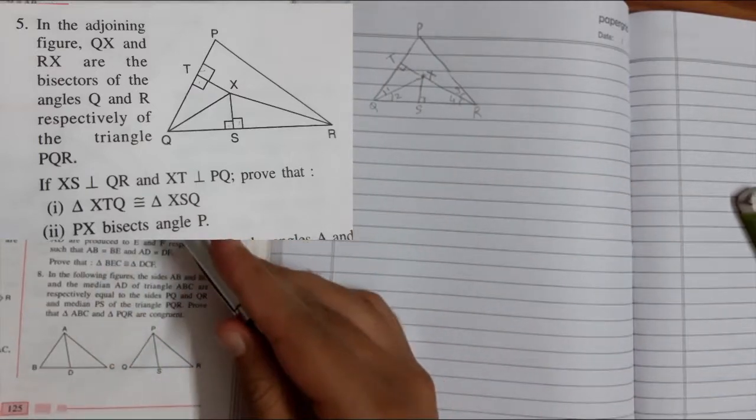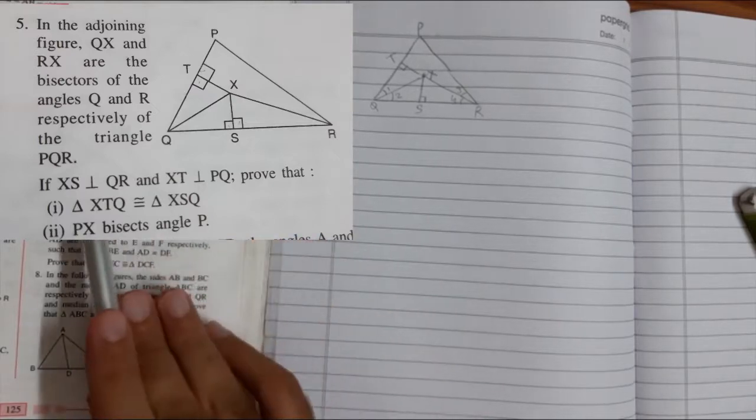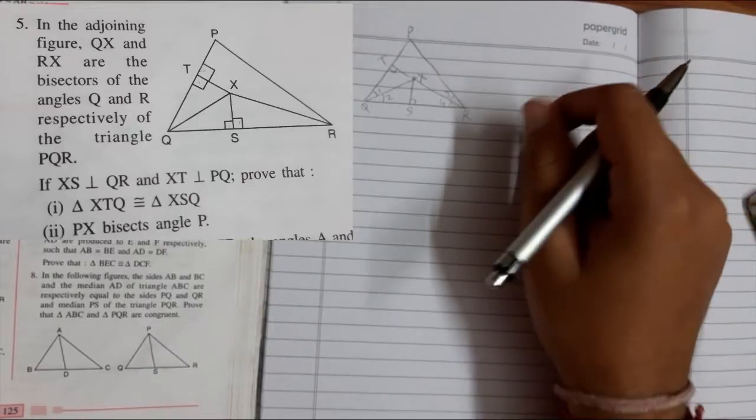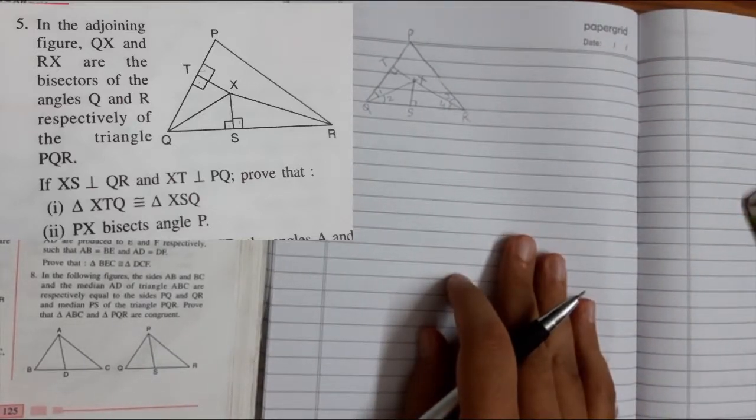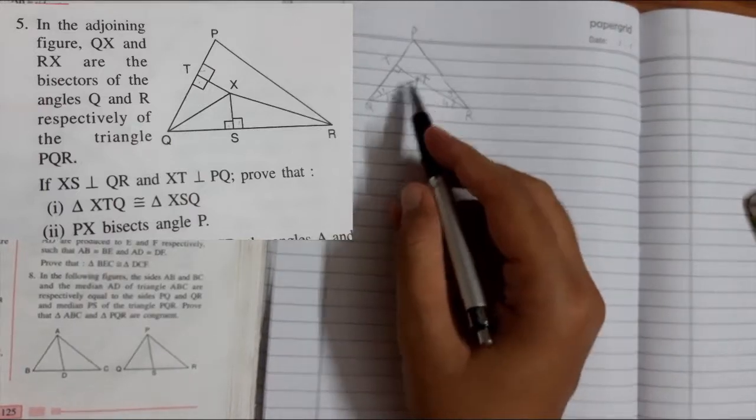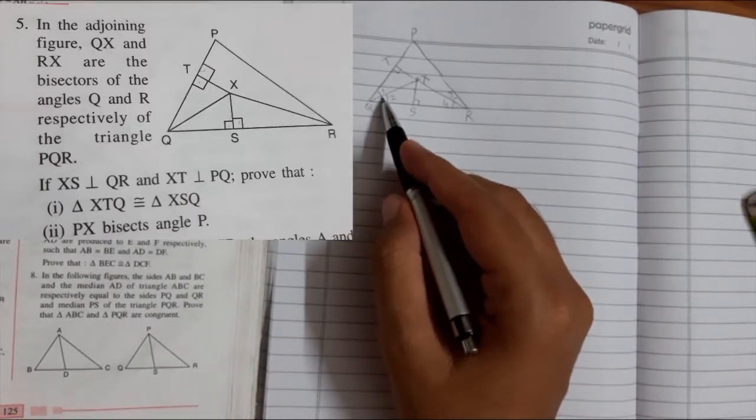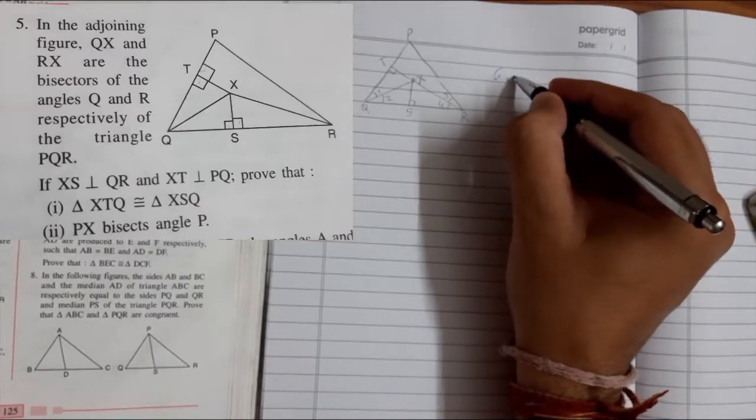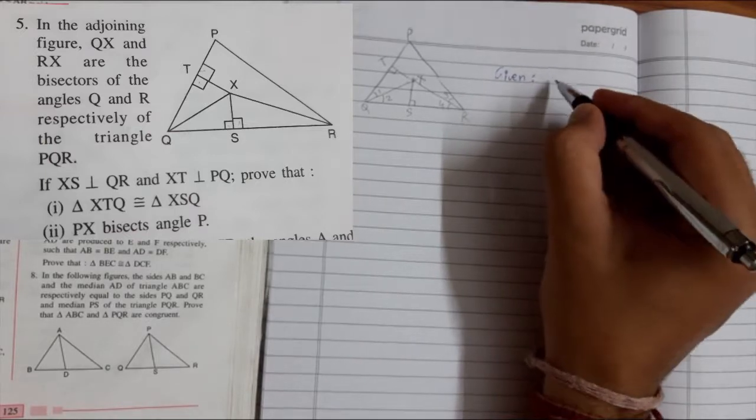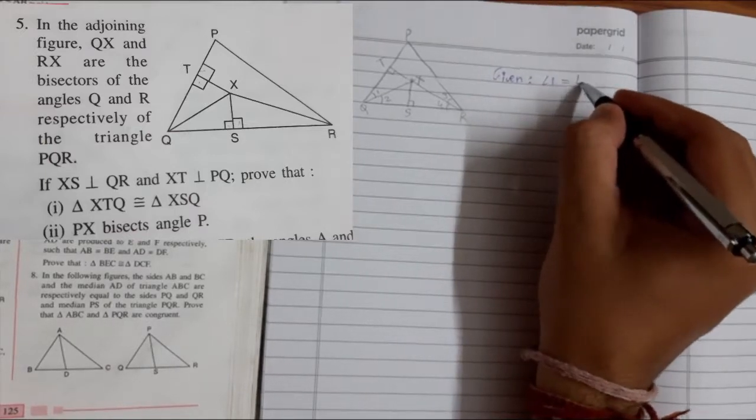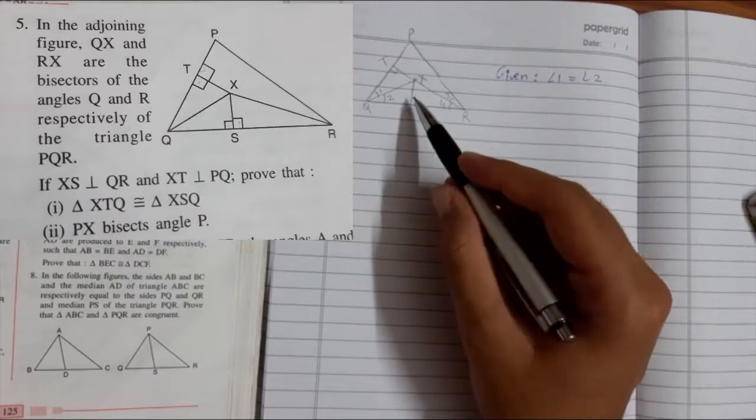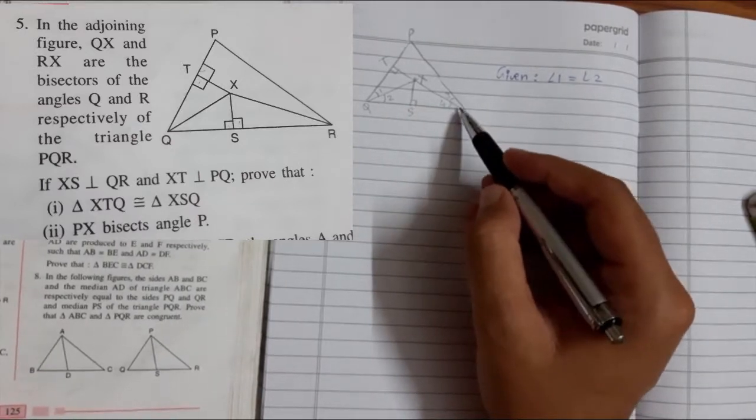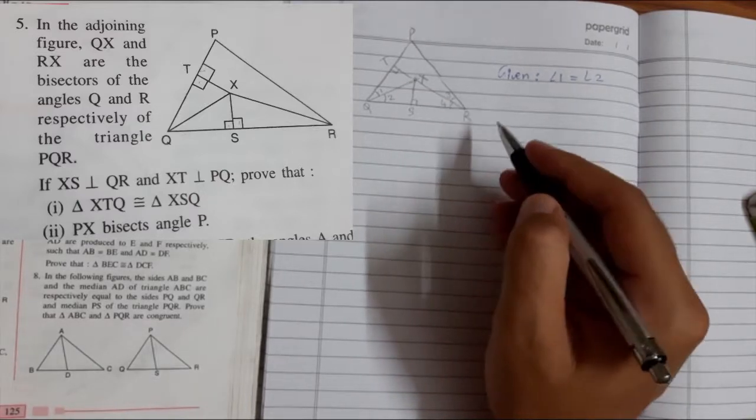QX and RX are the bisectors. Bisectors mean which divides the thing into two equal parts. So right now QX is dividing angle Q into two equal parts. So angle 1 and angle 2 are equal. Now RX is also the bisector, so angle 3 equals angle 4.